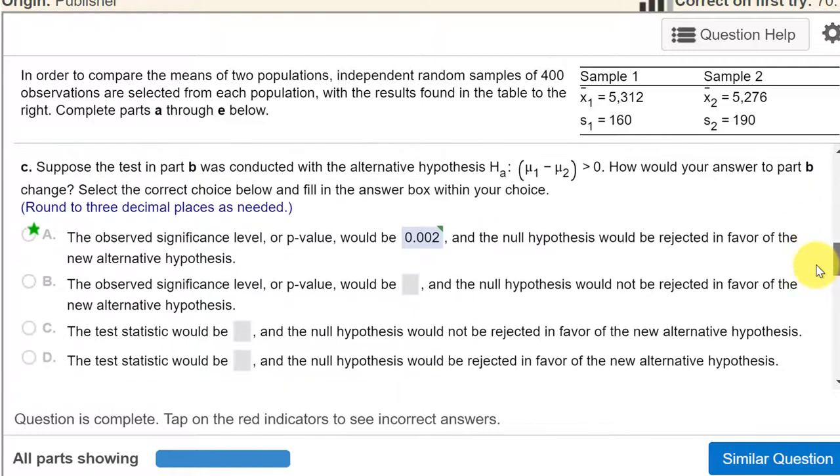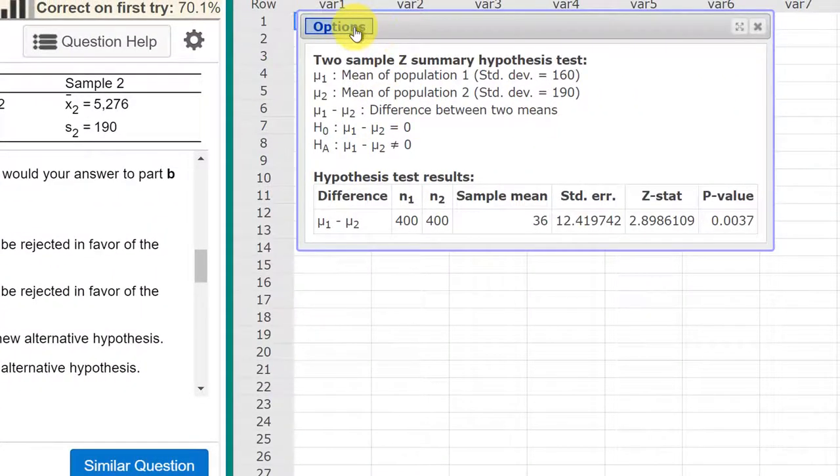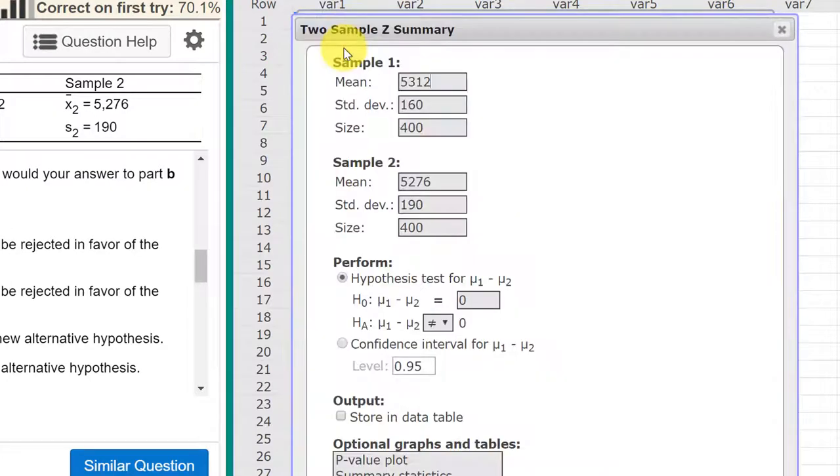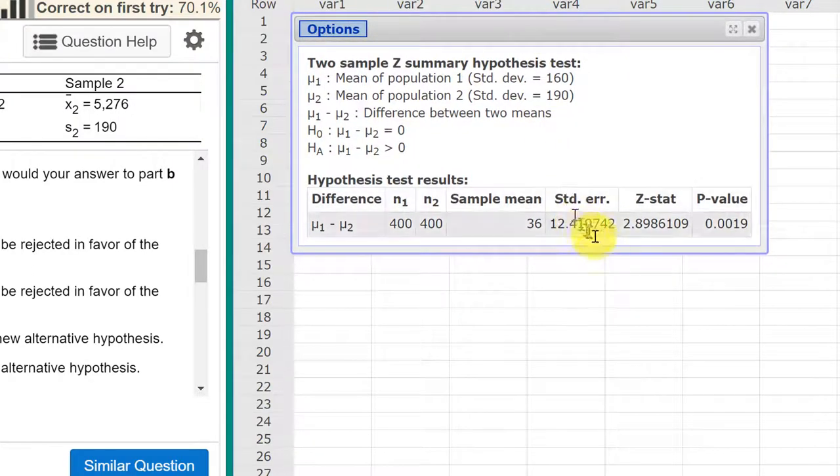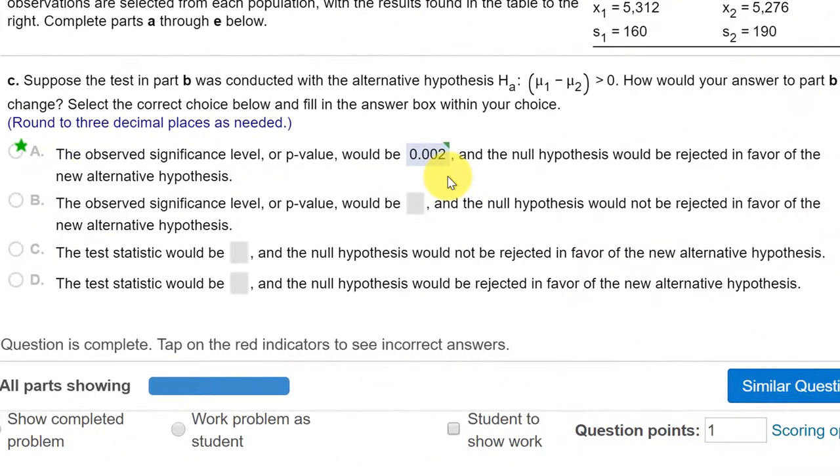Let's go to part C. Suppose the test in part B was conducted with the alternative mu1 minus mu2 greater than zero. All we need to do again is go to options, edit, and then we change our operator to greater than to match that. And we click compute and we get our answer box again here. Our test statistic didn't change, but our p-value did,